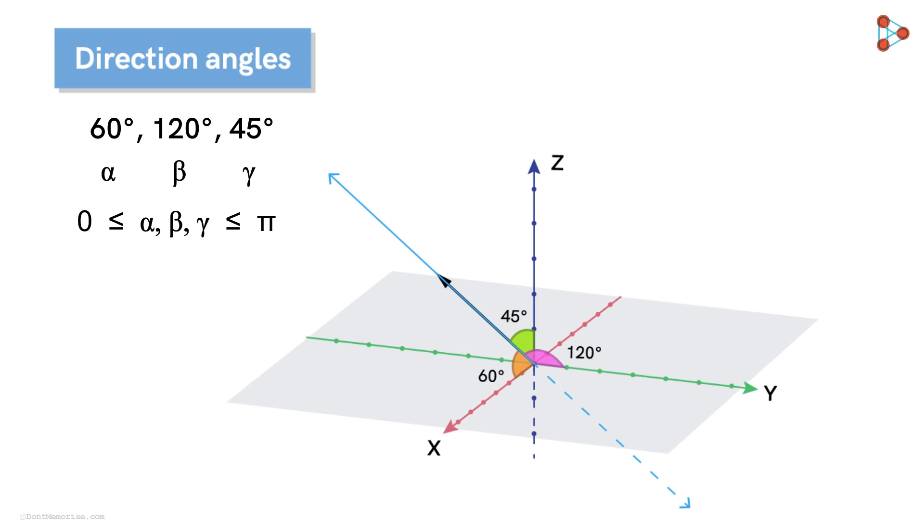Obviously, a line and a vector are two different things. A line extends infinitely on both sides and has no unique direction, whereas a vector is an arrow of finite length pointing in a specific direction. What will be the direction angles of this line?